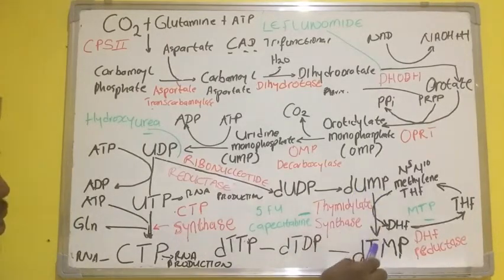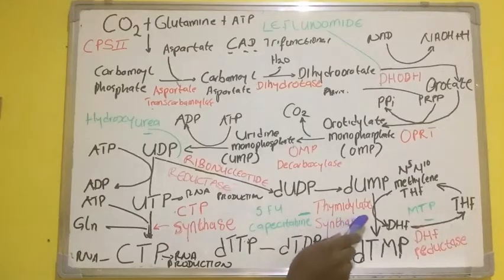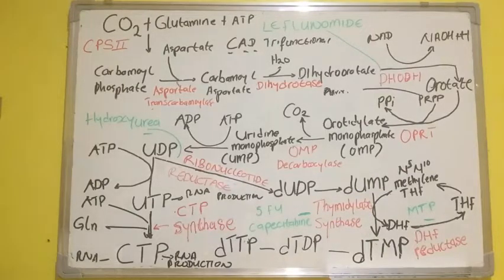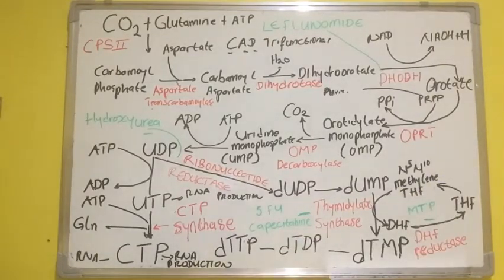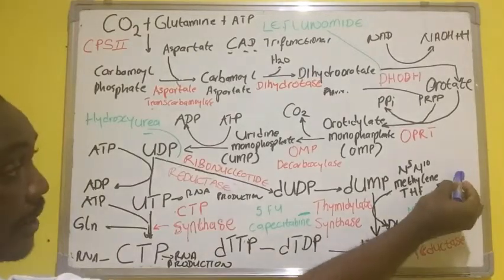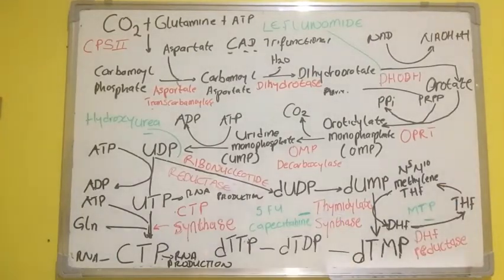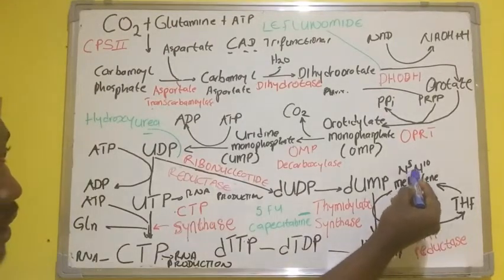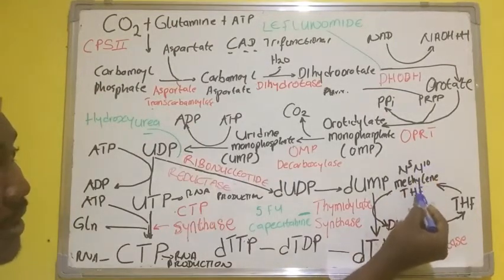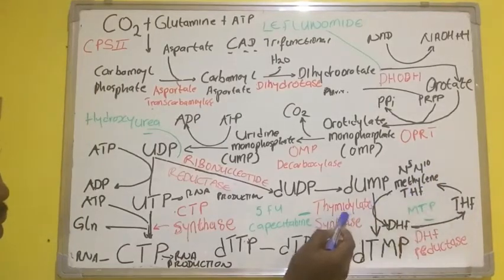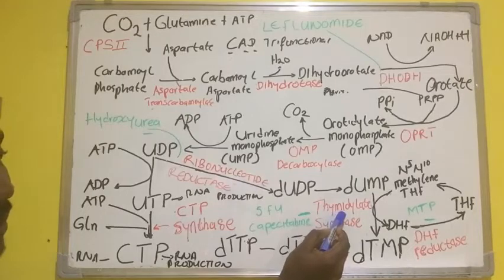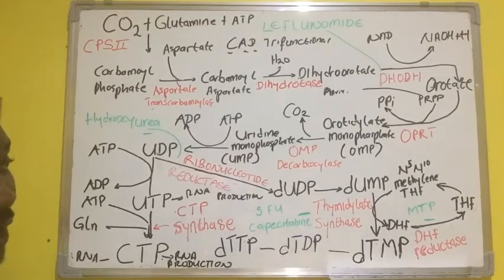This conversion of dUMP to dTMP is catalyzed by thymidylate synthase. This thymidylate synthase needs folic acid, which is vitamin B9, for it to function effectively. Specifically, N5,N10-methylene tetrahydrofolate is needed for thymidylate synthase to function effectively.